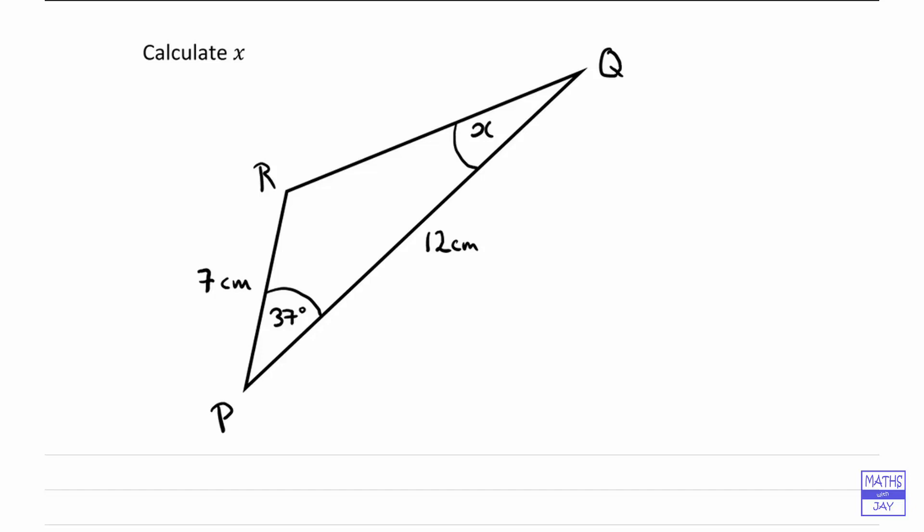So let's see what we're trying to do. We want to find angle x and that's opposite a side that we do know, but the other angle that we've got is not opposite the other side that we know.